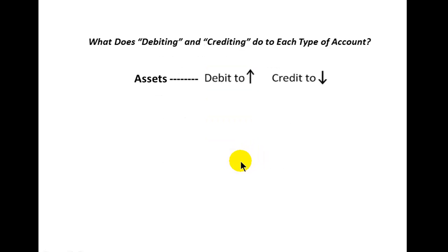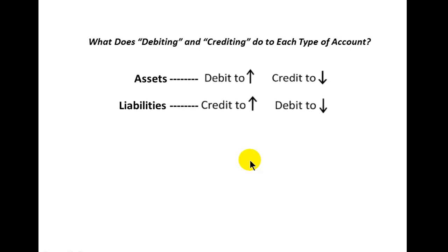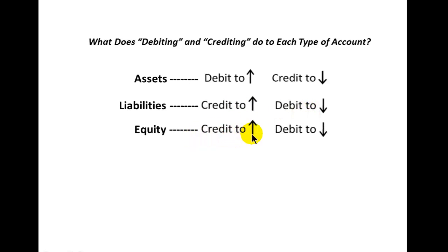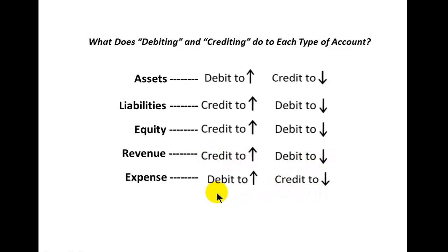So here we have what debiting and crediting do to each type of account. Assets: debit to increase, credit to decrease. Liabilities: credit to increase, debit to decrease. Equity: credit to increase, debit to decrease. Revenue: credit to increase, debit to decrease. Expenses: debit to increase, credit to decrease. These are things that are like flashcards in multiplication — you just need to memorize them.